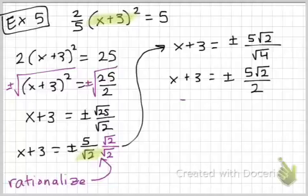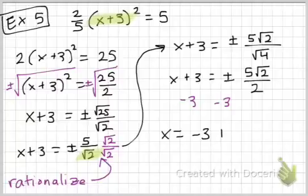My last step is going to be to finish solving for x. I need to subtract 3 from both sides. Negative 3 plus or minus 5 root 2 over 2. And now I am done.